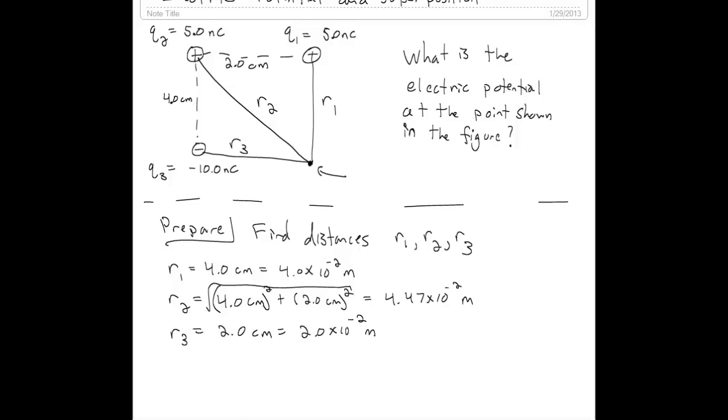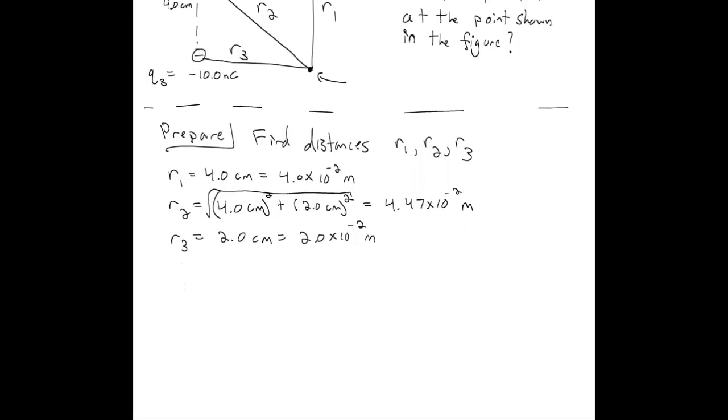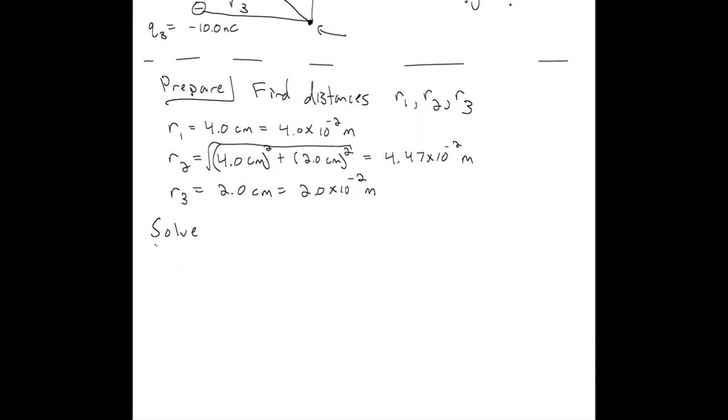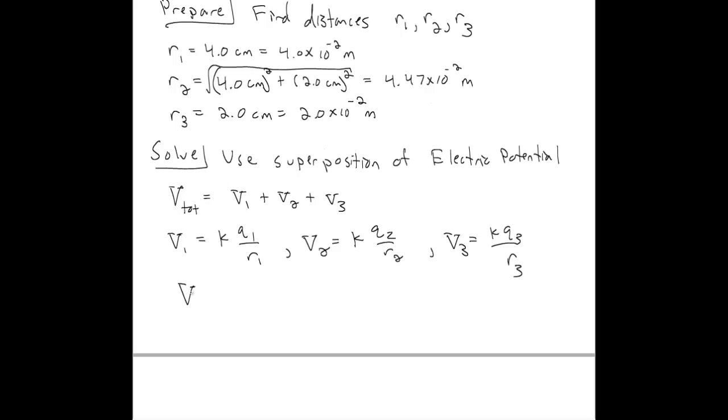Once we have all those distances R1, R2, and R3, we want to solve our system. To solve, we're going to use the idea of superposition, so that the total potential is the sum of the individual potentials from the individual charges, which we can write out individually. Putting all these together and multiplying out, we find that the total potential is negative 2,400 volts.